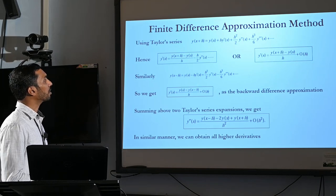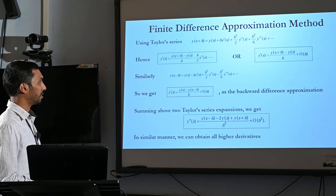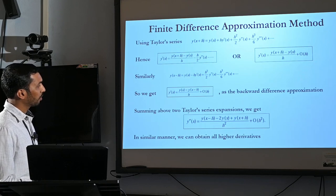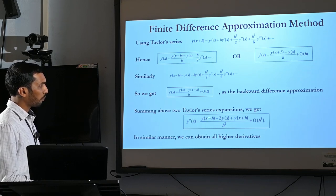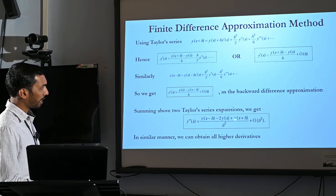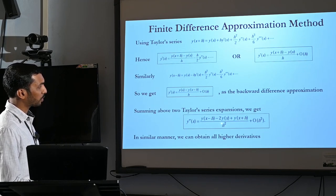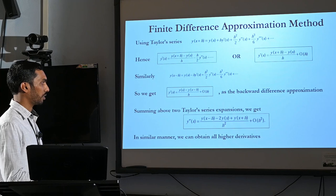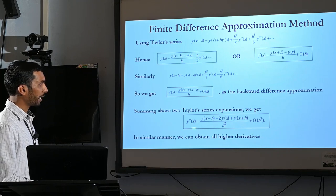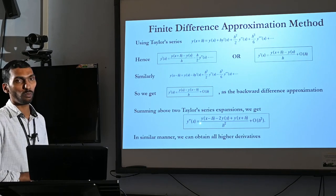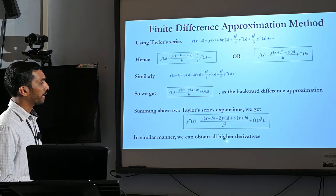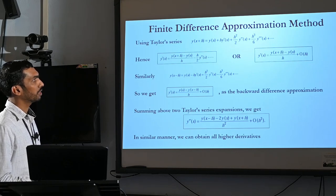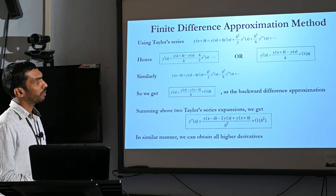Again, summing these two Taylor series expansions and rearranging, we get: y''(x) equals [y(x-h) plus y(x+h) minus 2*y(x)] divided by h², plus errors of order h². So we obtain the second derivative of y. Similarly, we can obtain all higher derivatives using this finite difference approximation in a very easy manner.